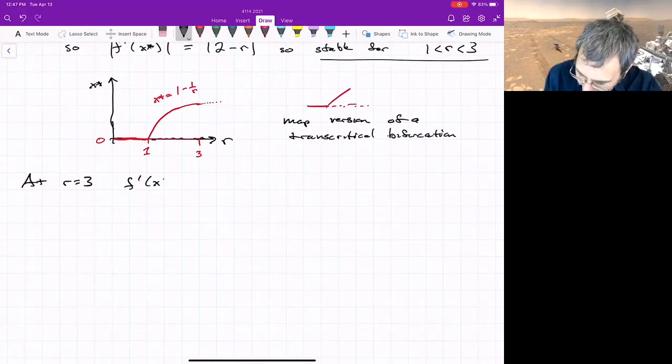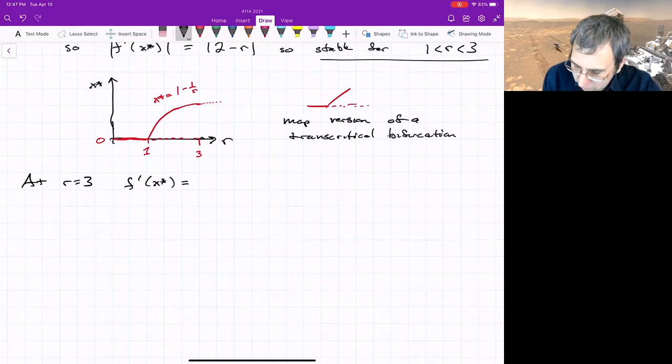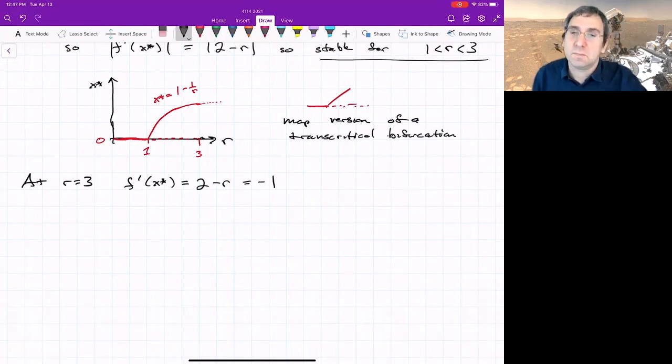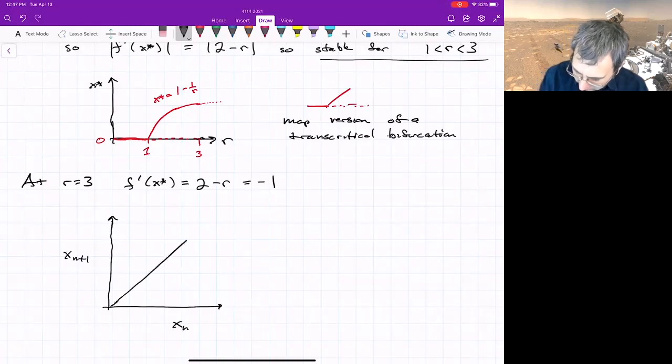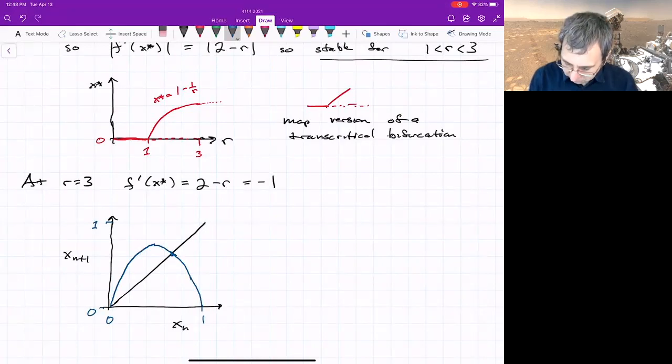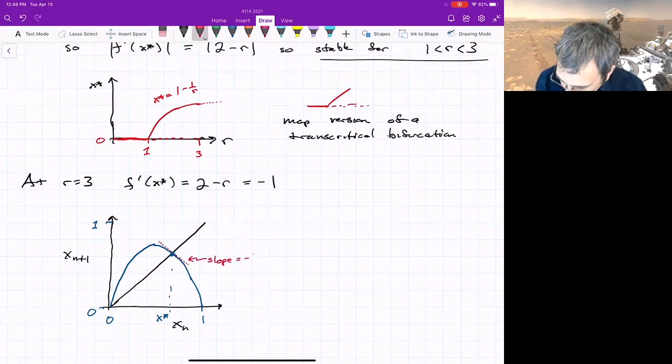f' of that fixed point equals 2 - r. If r is 3, then this equals exactly -1. Let me sketch what the plot looks like. This is x_n and then x_{n+1} with the 45 degree line, and then we've got our map. This is our fixed point x*. f' at x*, I was trying really hard to make it a slope of negative 1.